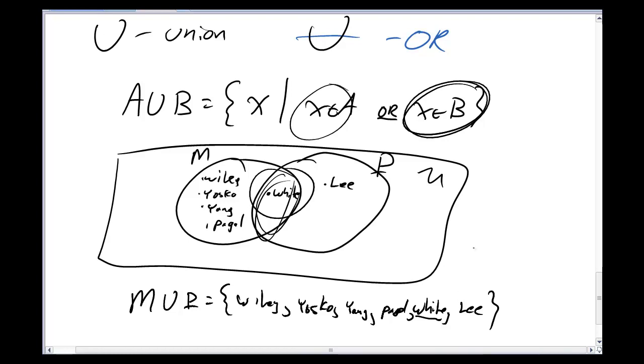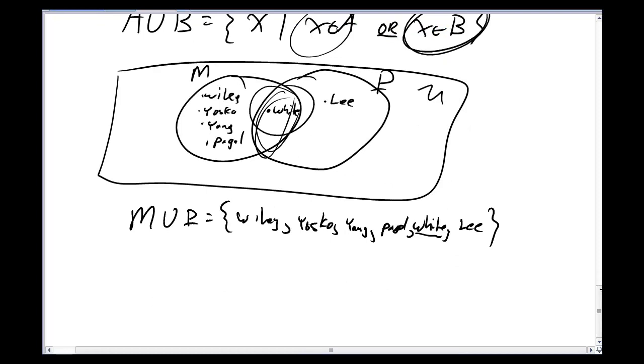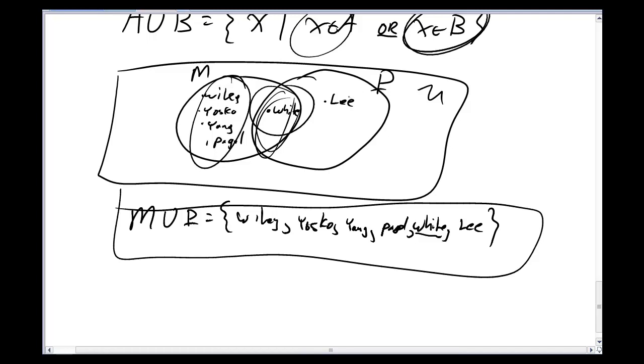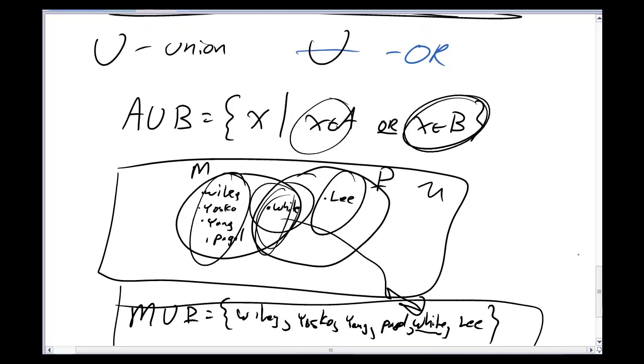I don't have to write White a second time because I've already written White in once. And remember, sets don't allow for duplicates. You only put one copy of each thing in your set box. So, this is the union. I think in general, for union, people would be pretty happy to see Wiley, Yasko, Yang, and Poggle, and to see Lee. I think it's the White that messes people's heads. Mr. White is both a math person and a physics person, and that means he gets to be in both. And so, when I union up the sets, we see Or. And if you think Or, you're thinking, well, he's both.